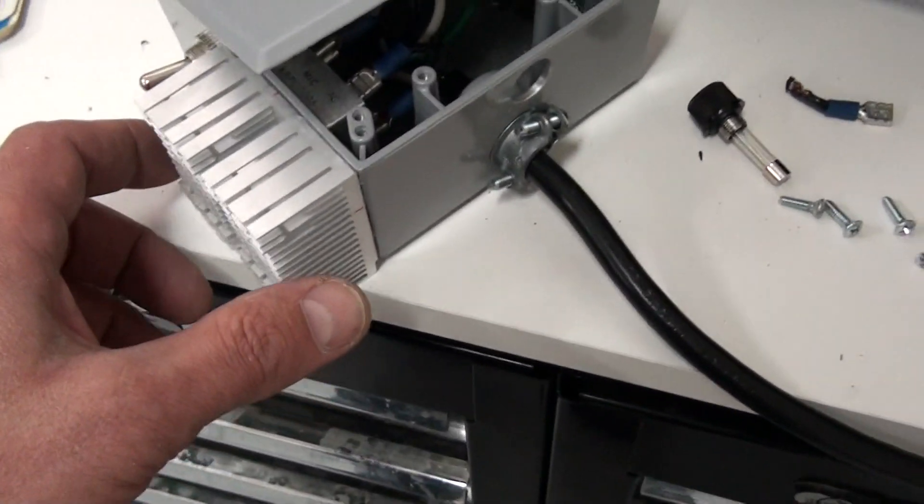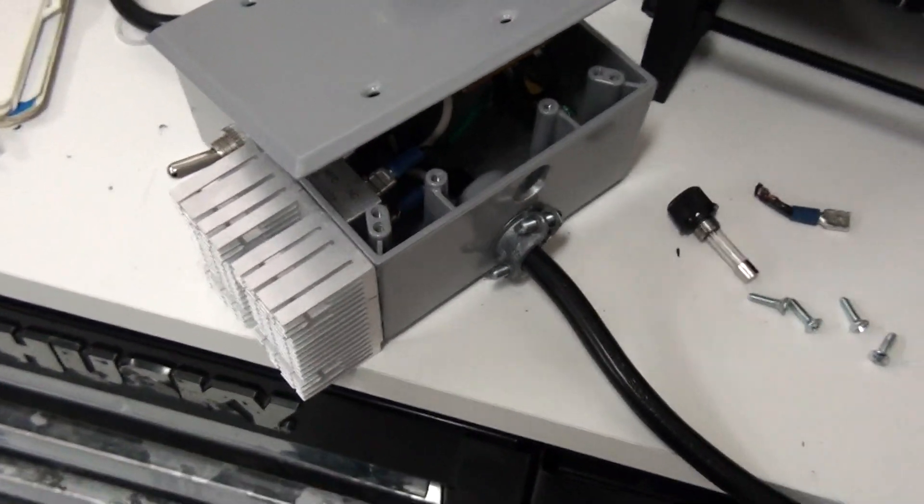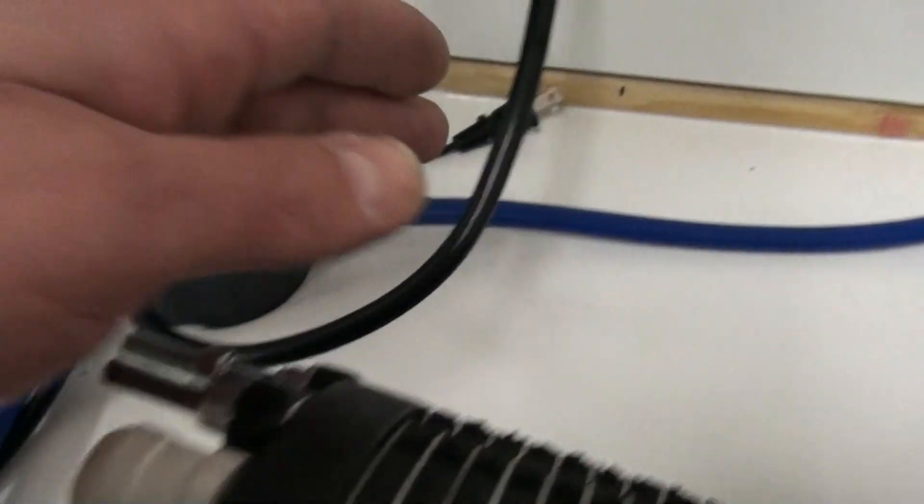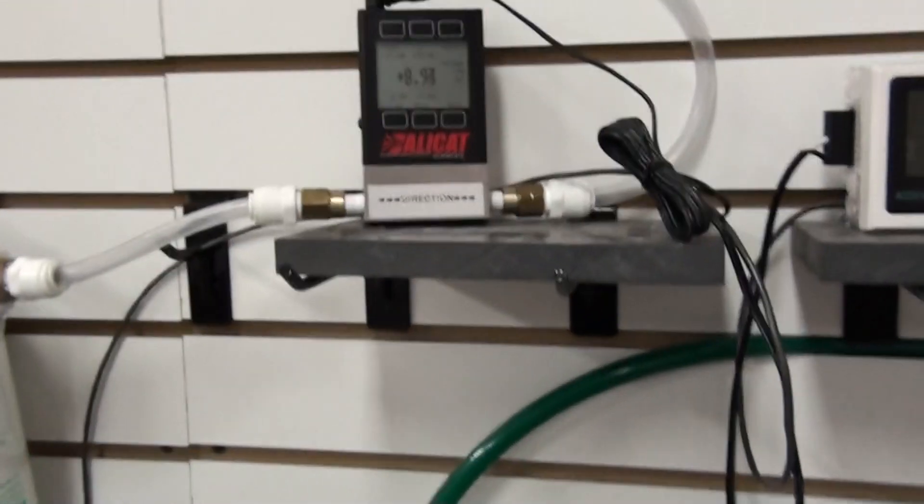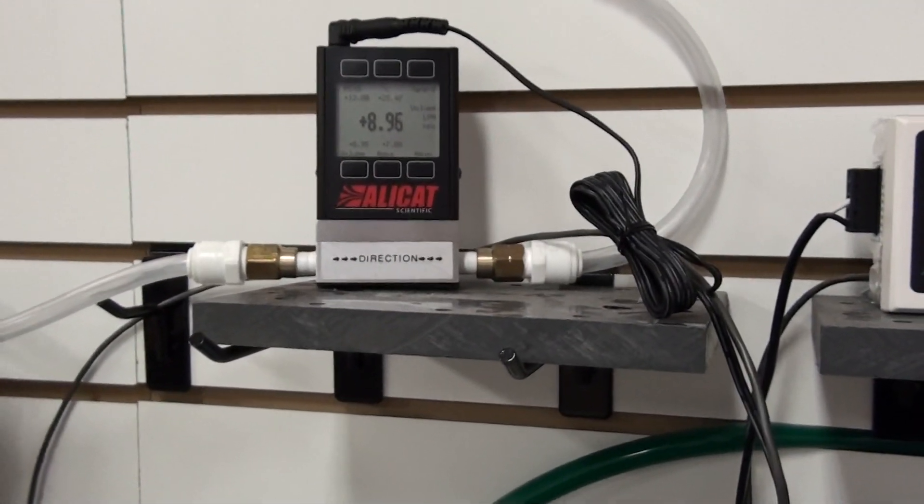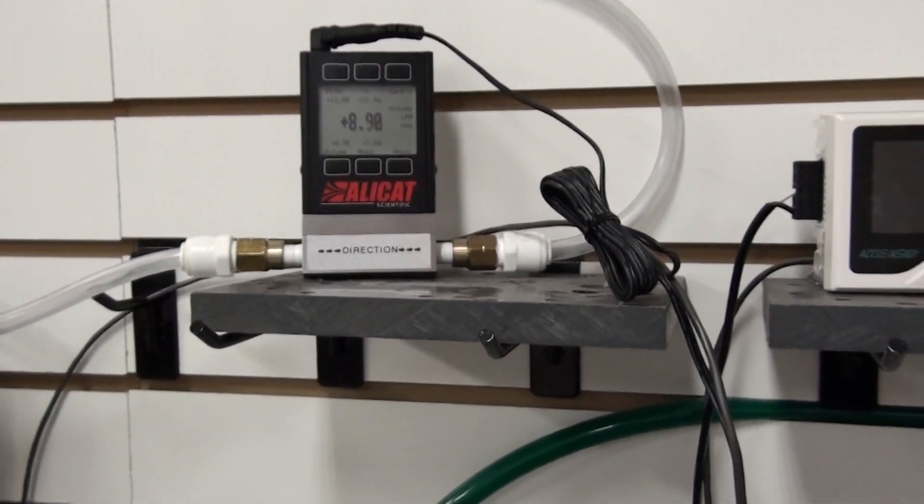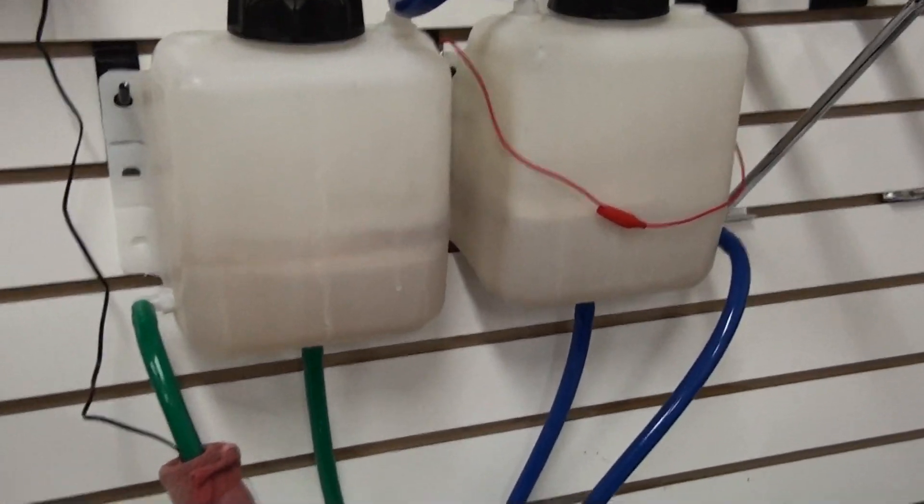This is the rectifier box, and you can see it plugged into the wall right there. Okay, so we got eight, almost nine liters a minute. Here's the reservoirs.